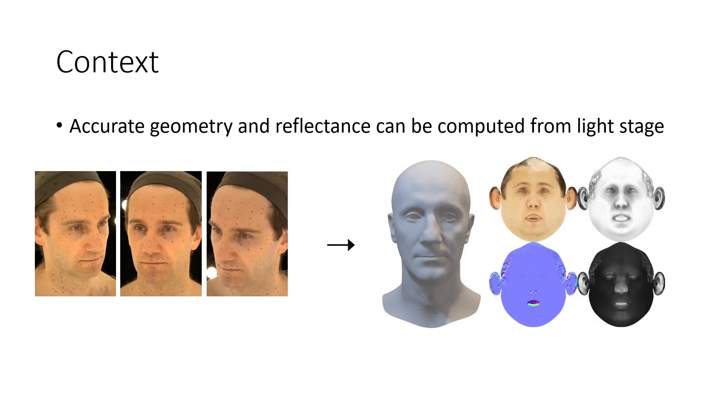Geometry and reflectance can be captured under the controlled conditions of a light stage, but it is costly to acquire large datasets in this fashion. Moreover, training only with this type of data leads to poor generalization with in-the-wild images.